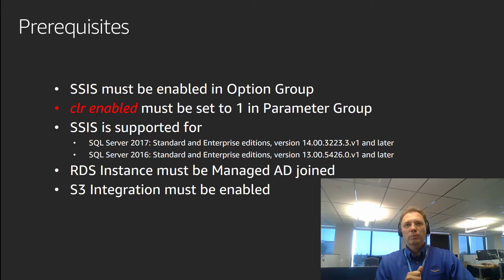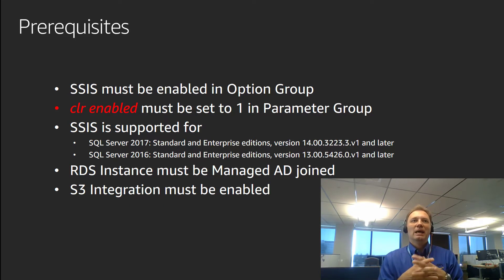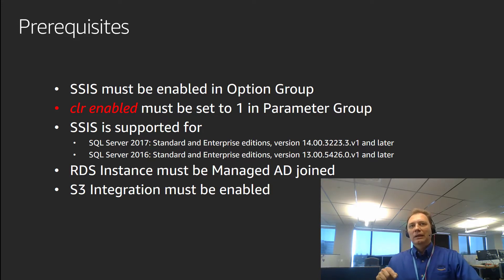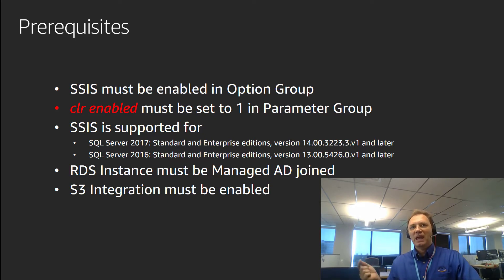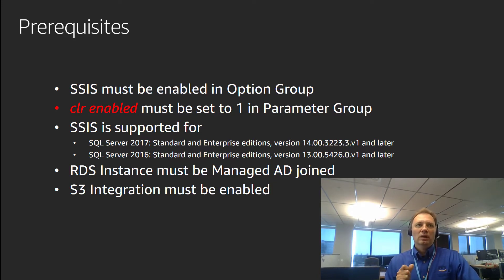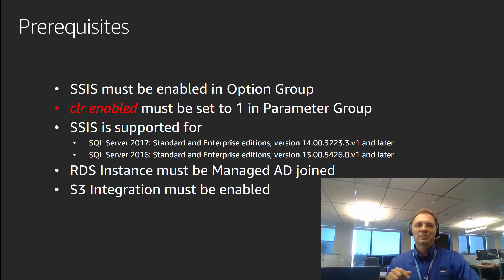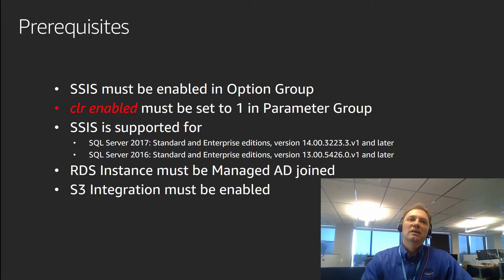The fourth bullet point is that the RDS instance hosting the SSIS package has to be Active Directory joined — and not only AD joined, that Active Directory has to be AWS managed. You cannot join the RDS instance with a self-managed Active Directory. And the last requirement is that the S3 integration feature must be enabled on that RDS instance, because the way we deploy SSIS packages all goes through S3, very similar to the way we work with native backups.